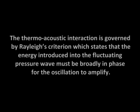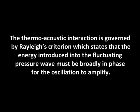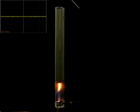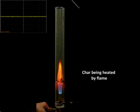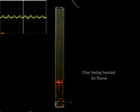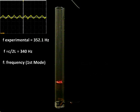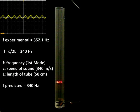A Rijke tube converts heat applied in specific locations to sound by creating a self-amplified standing wave. The thermo-acoustic interaction is governed by Rayleigh's criterion, which states that the energy introduced into the fluctuating pressure wave must be broadly in phase for the oscillation to amplify. In this experiment with a 50 cm long tube, a few pieces of charcoal set on a wire guard at about a quarter of the height of the tube are brought to red-hot condition with a Bunsen flame. When the flame is withdrawn, the tube starts singing at a frequency calculated as the acoustic speed divided by twice the tube length.